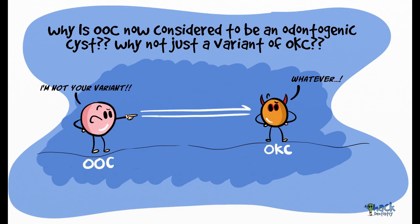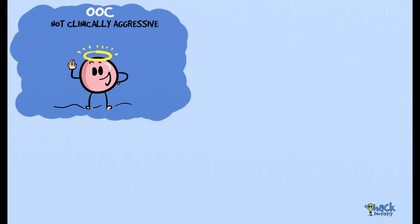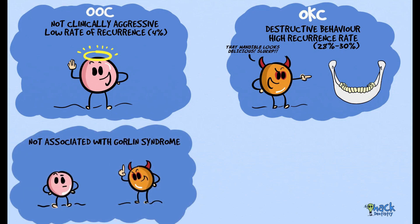Ortho-keratinized odontogenic cyst may resemble odontogenic keratocyst clinically and histologically, but there are quite a few differences that make it stand out. For starters, ortho-keratinized odontogenic cyst is not clinically aggressive and has a low rate of recurrence — as low as 4%. This is in contrast to odontogenic keratocyst, which shows destructive behavior and has a high rate of recurrence. Reports indicate odontogenic keratocysts to have an average recurrence rate of 28–30%.